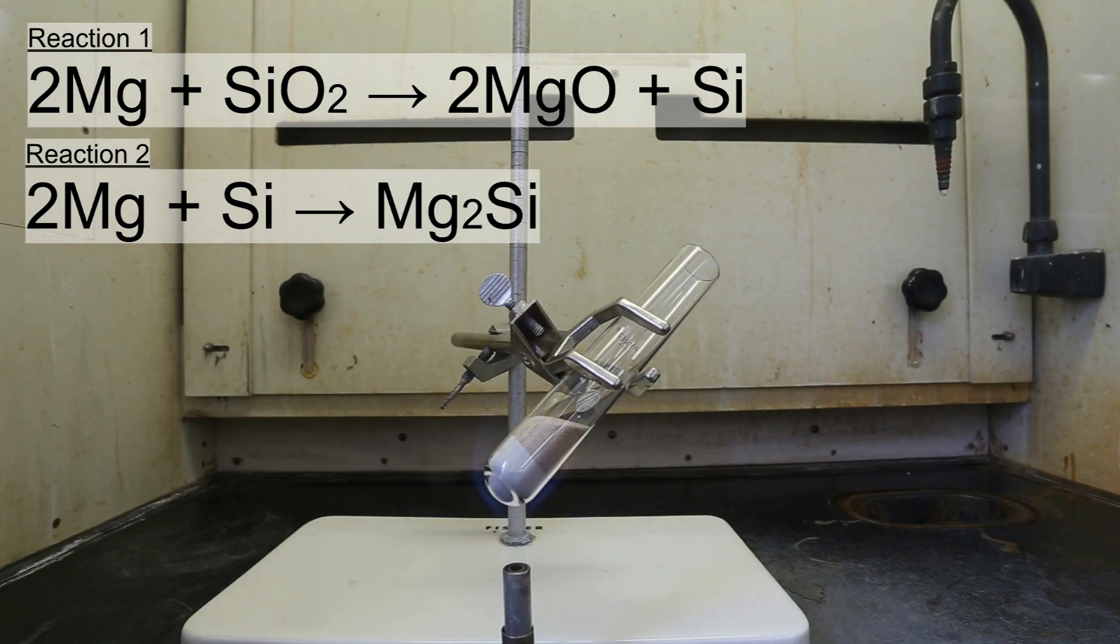The test tube will heat up immensely, and any magnesium remaining will react with the silicon metal that was produced in the first reaction. For this reason, we must use an excess of magnesium metal.